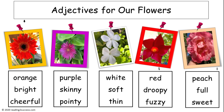Our third example is a list of three adjectives listed for each picture. The pictures were taken in the backyard and are displayed in the order they were picked. This is done to prepare kids for the next writing piece.